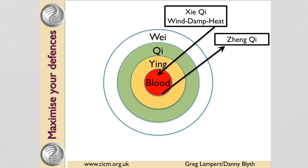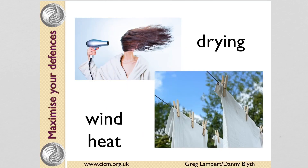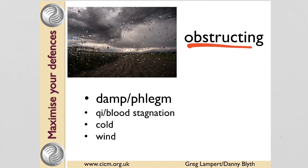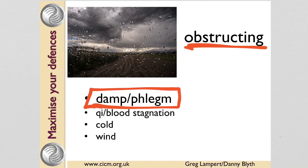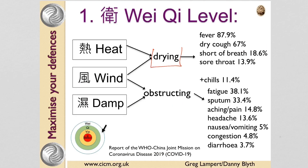If we look at symptoms, we have fever, dry cough, tight chest, and shortness of breath. If we want to dry something we think about wind and heat — like the perfect day for drying washing or how we dry our hair. We also think of obstruction, especially caused by damp and phlegm, but also to some degree Qi and blood stagnation, wind and cold. So we have the drying action of wind and heat combined with the obstructing action of damp.